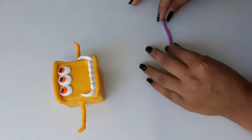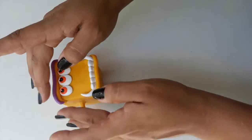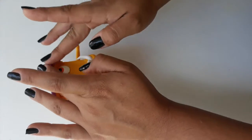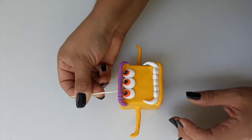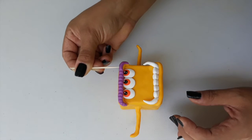For the eyebrow, roll some purple clay into a long thin cylinder and place above the brow bone you just made. Then with the side of a toothpick, press little lines into Monster Brother's purple eyebrow for added detail.